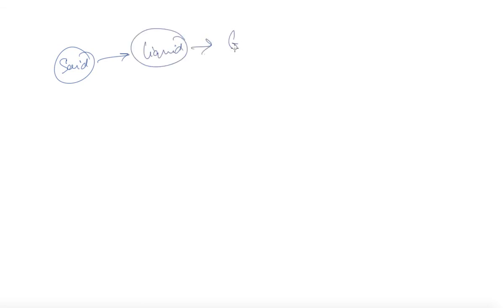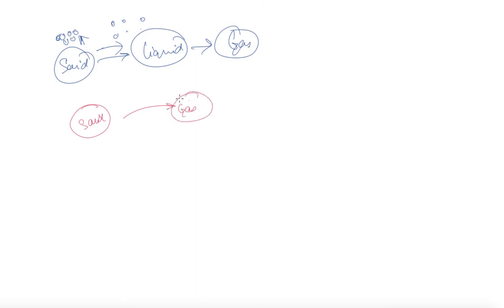In some substances you observe a curious phenomenon. After solid you have liquid, and then gas, depending upon intermolecular forces of attraction. But certain substances undergo a different change in state — from solid they straight away go to gas. This process is known as sublimation: the conversion of a solid directly to gas without going into the state of liquid.